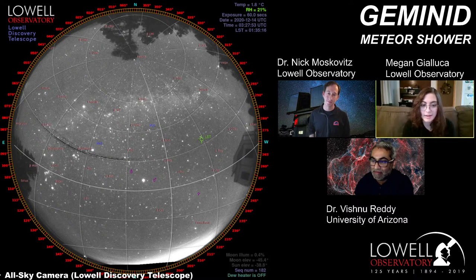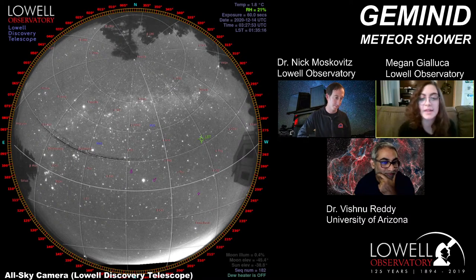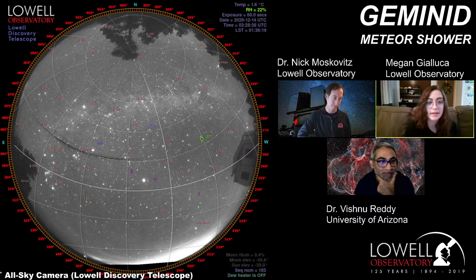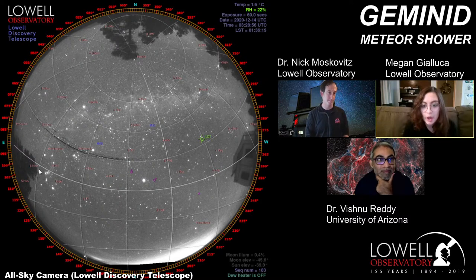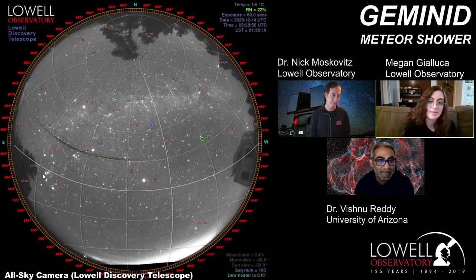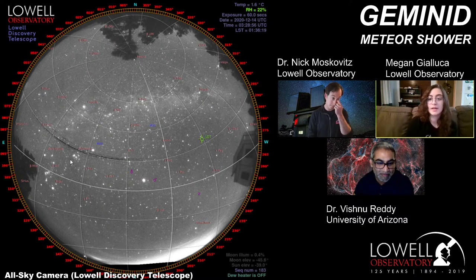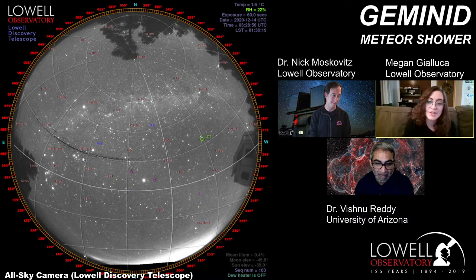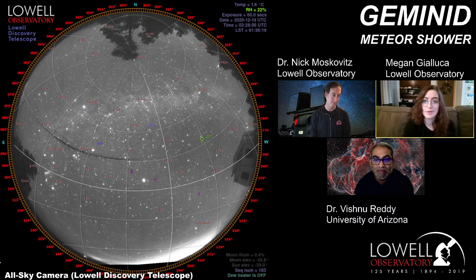Looking at the LDT all-sky camera: in the bottom right area you can see Orion's belt pretty clearly — one of the most common asterisms. Up and to the upper right of Orion's belt, you can see a V shape — that's the Hyades, the second closest star cluster to us, part of the constellation Taurus. That general area near Orion is essentially where the radiant of the Geminid stream is. If 'radiant' is a new term, don't worry — we'll define it in a little bit.